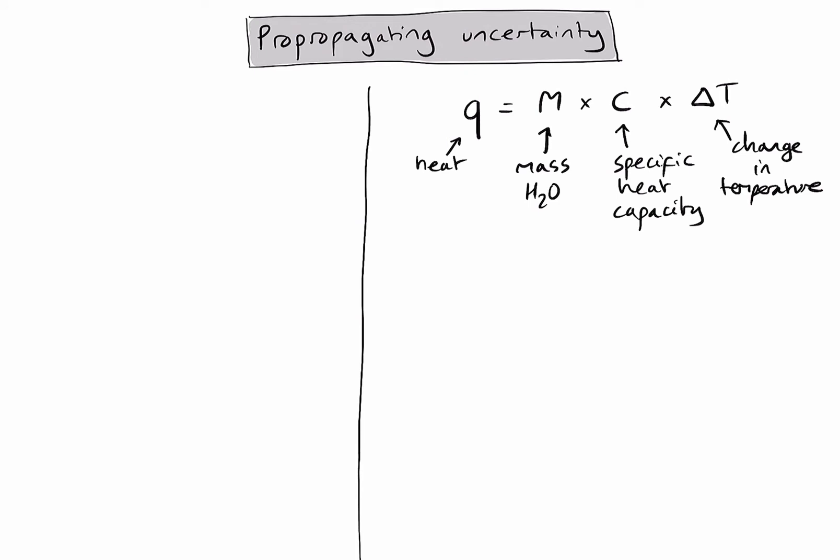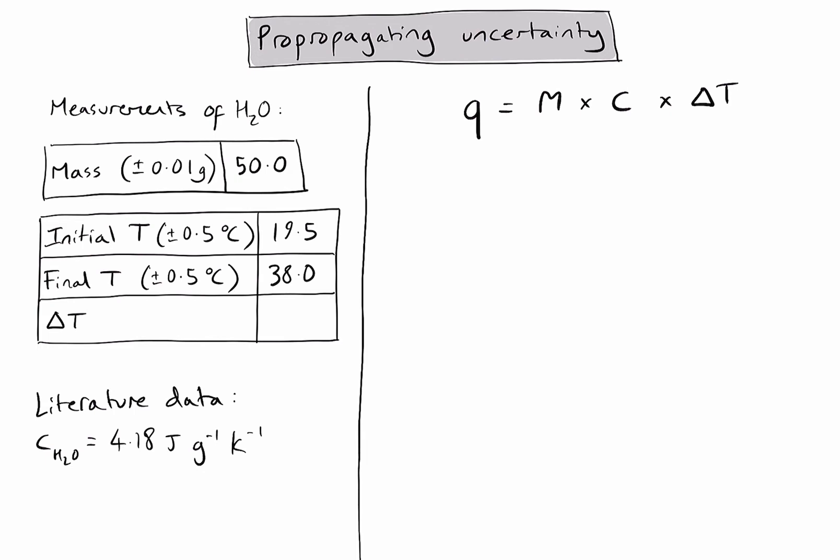Let's now look at some example data. You'll notice the data is separated into two sections. Firstly, I have measurements that I made personally during the experiment, and secondly, we often need some literature data, depending on the calculation that we're doing. First of all, you'll notice that in each column heading, I have the absolute uncertainty for my measurements. If you're not sure how to find these, you'll want to check out one of the other cohesive chemistry videos.